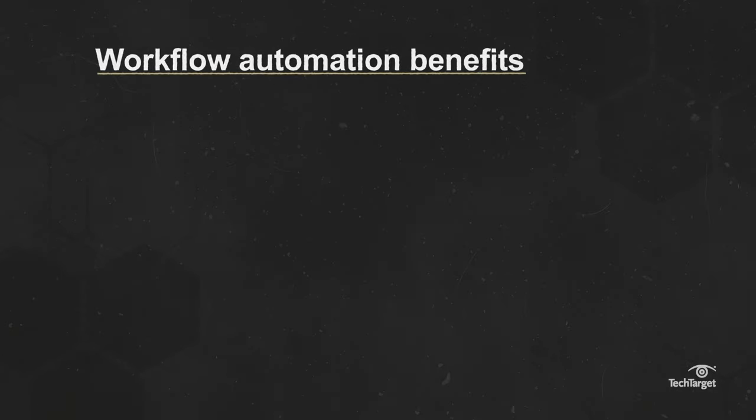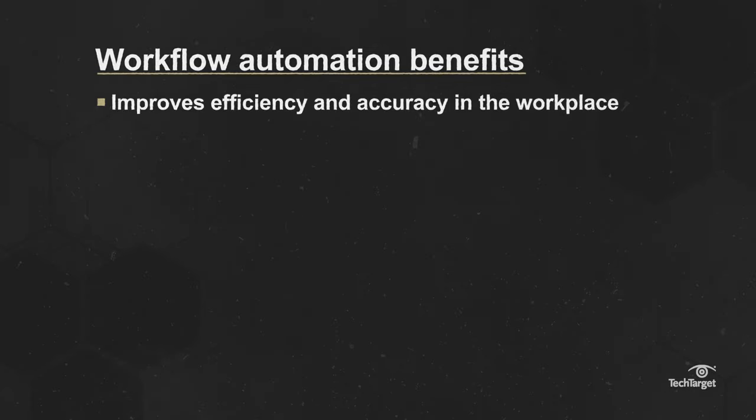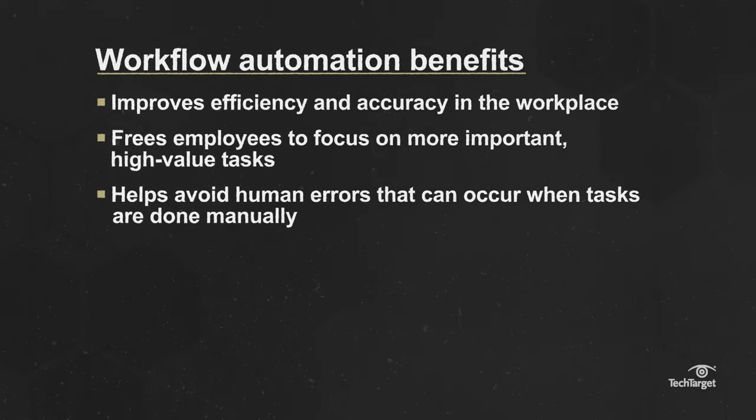Using software to automate business processes provides these key benefits. It improves efficiency and accuracy in the workplace. It frees employees to focus on more important and high value tasks. It helps avoid human errors that can occur when tasks are done manually.